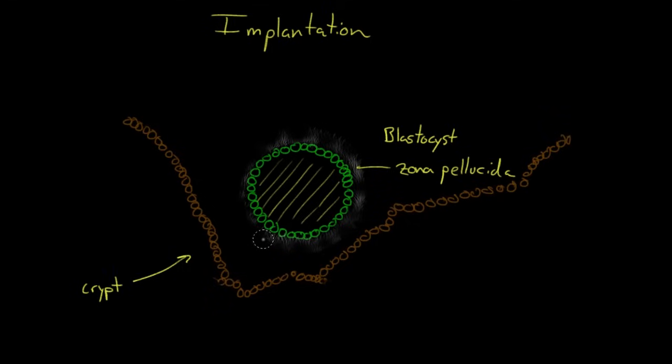Here, your zona pellucida is still disintegrating away, and your outer layers of cells can come directly in contact. This contact between the two cell layers is called apposition.